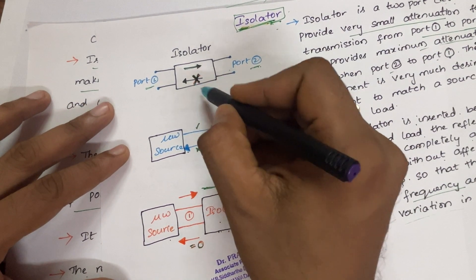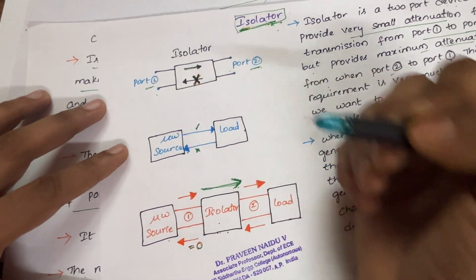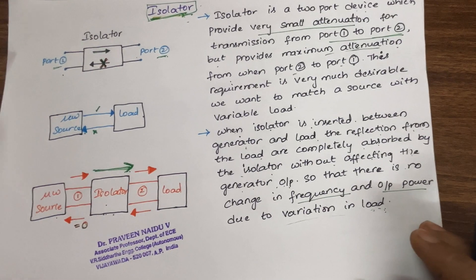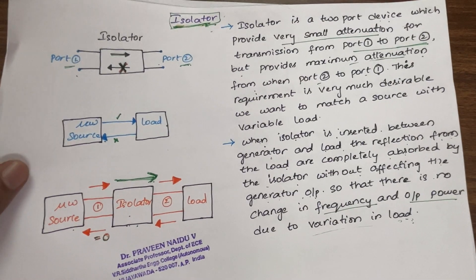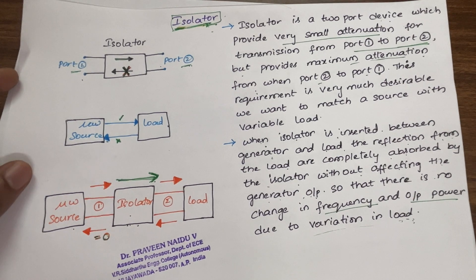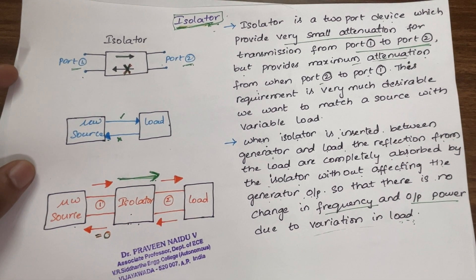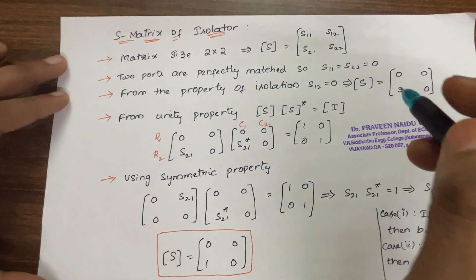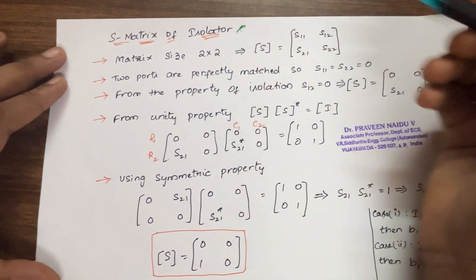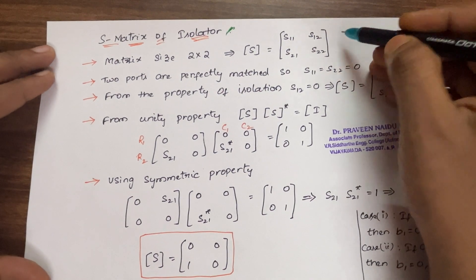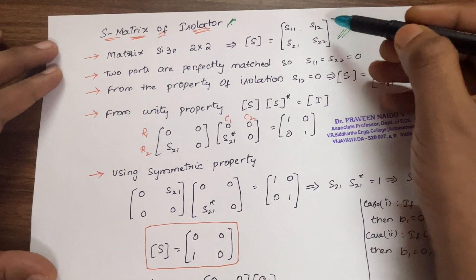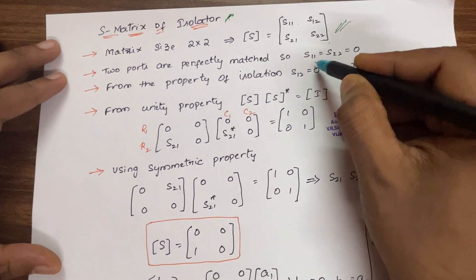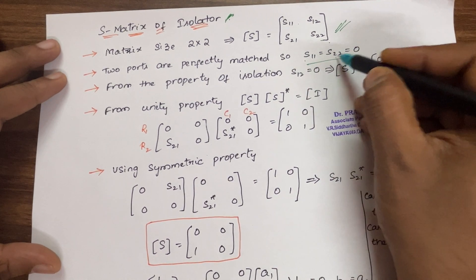That is how only one-way propagation occurs, and no reflected wave reaches the source — that is the importance of the isolator. In every microwave bench setup, the isolator is the default microwave component used after the microwave source and before the load. Now, for the scattering matrix of a two-port isolator: since it is a two-port device, the matrix size is 2×2, that is S11, S12, S21, and S22. Both ports are perfectly matched, so S11 = S22 = 0.